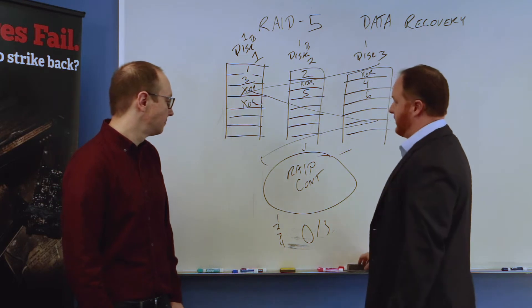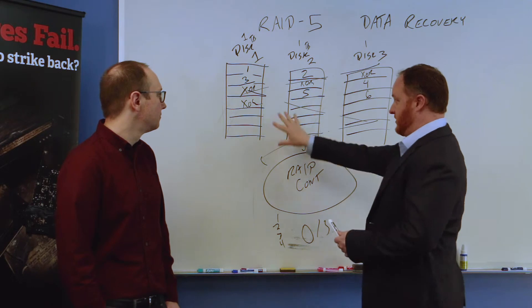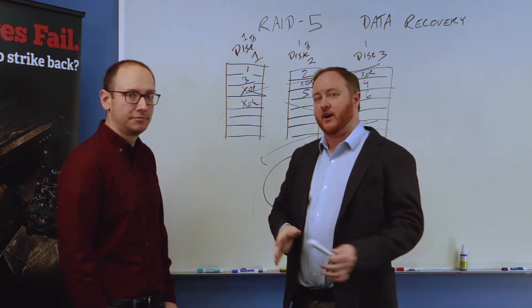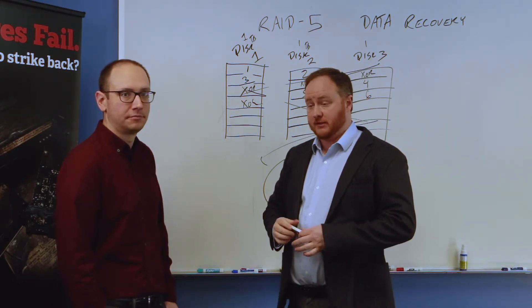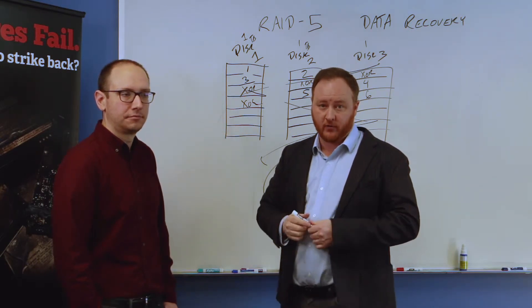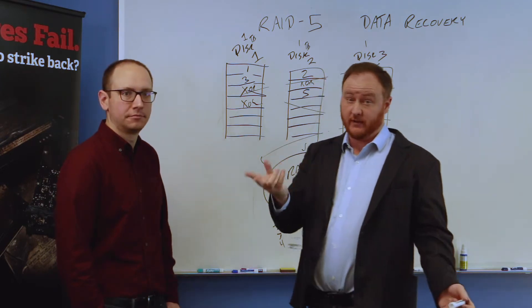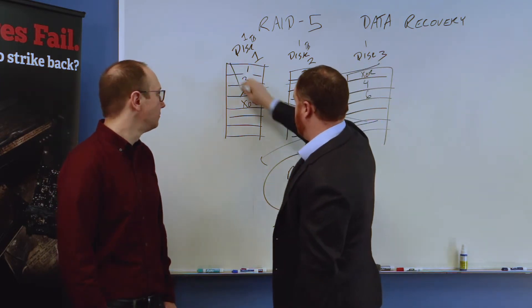So what do we see in nature? What we see in nature is the normal case is that we see a four or three drive RAID 5 come in here and the user is like, it died. And that's usually the amount of information we have.